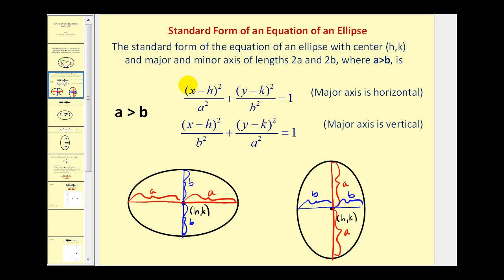The major axis is the longer of the two axes. So if the major axis has length 2a, this distance from the center would be a on each side. The same is true if we have a vertical major axis — each half would be length a. The shorter of the two axes, or the minor axis, will have length 2b, so each half will be length b.